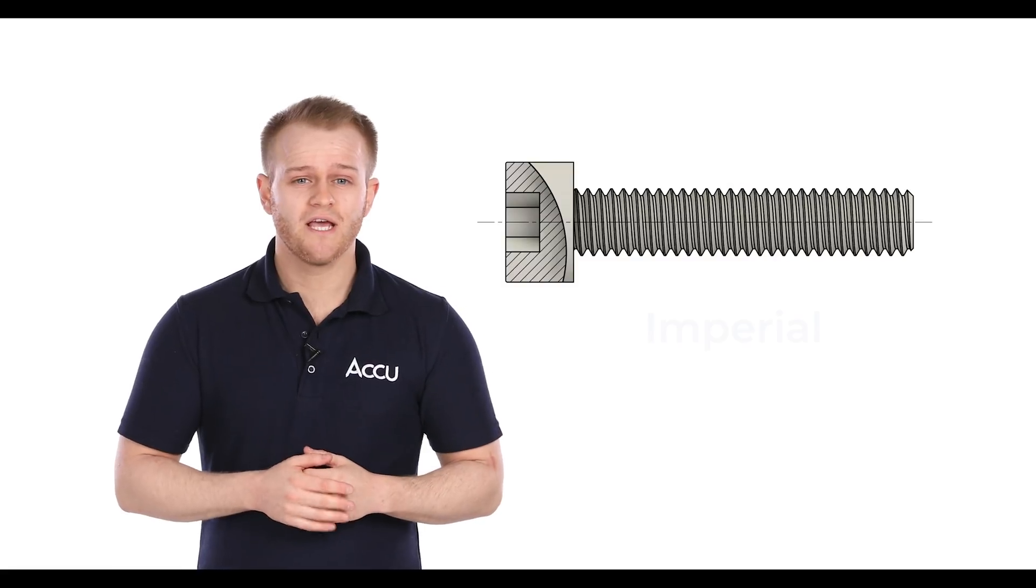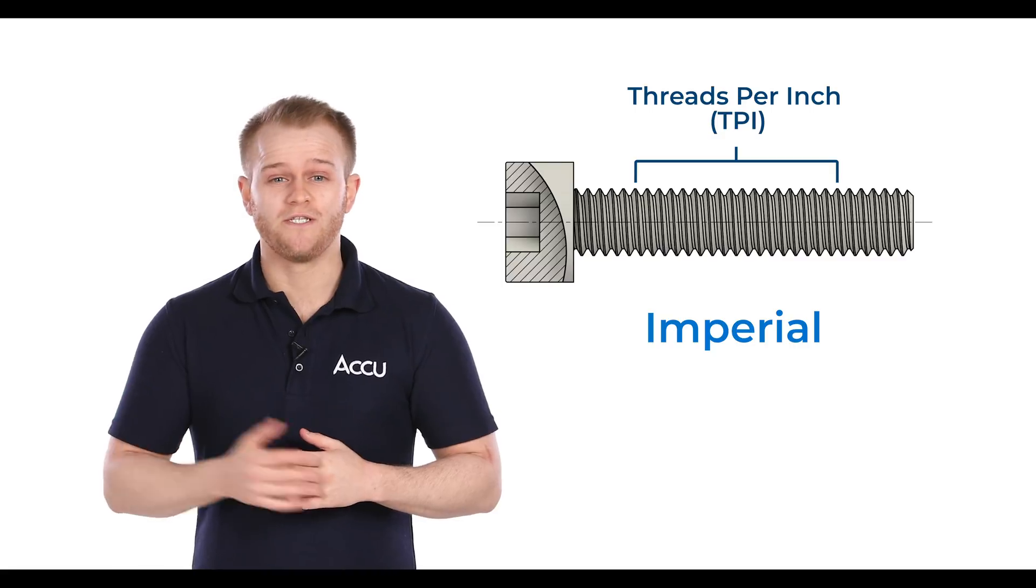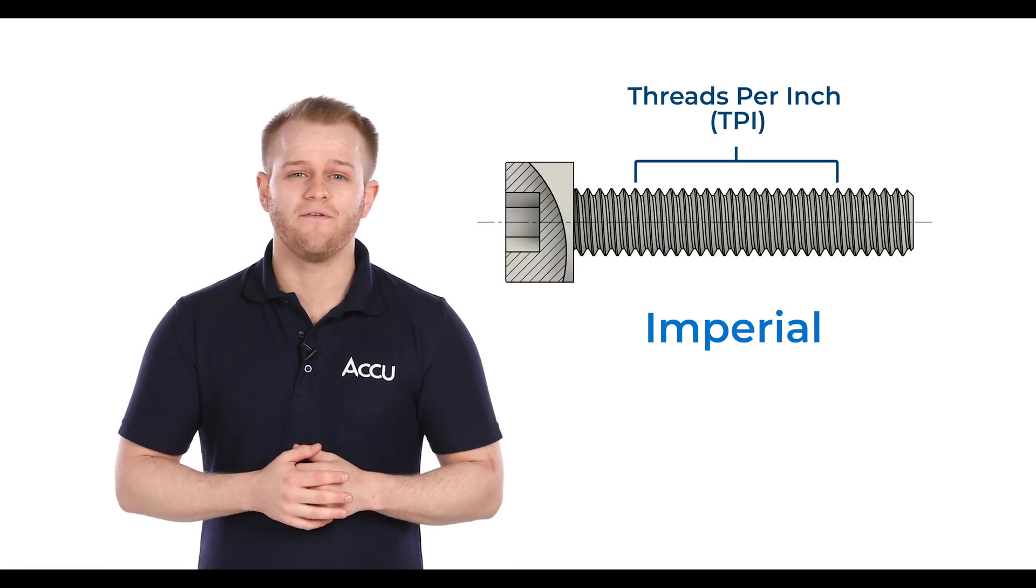And for imperial screws, it's the number of threads we can count across an inch of the screw's thread length, which we refer to as threads per inch, or TPI for short.